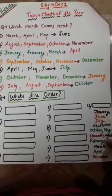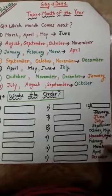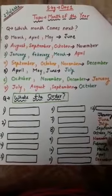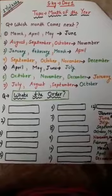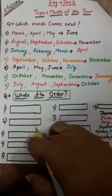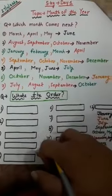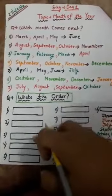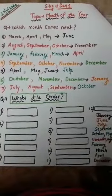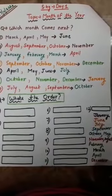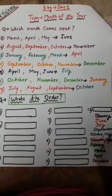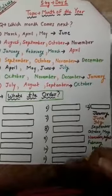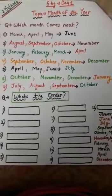You have to arrange the months into a sequence. In these blocks you have to write the months from 1 to 12 as mentioned. You have to fill them in order because they are not arranged yet, so you have to arrange them.